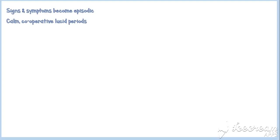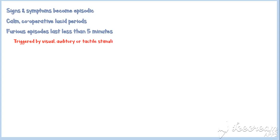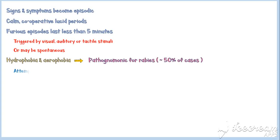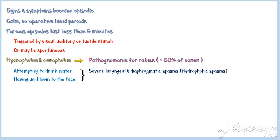With time, these signs and symptoms become episodic and interspersed with calm, cooperative lucid periods. Furious episodes last less than five minutes and are triggered by visual, auditory, or tactile stimuli, or may be spontaneous. Hydrophobia and aerophobia are pathognomonic for rabies and occur in about 50% of cases. Attempting to drink water or having air blown to the face will trigger severe laryngeal and diaphragmatic spasms and a sensation of asphyxia.